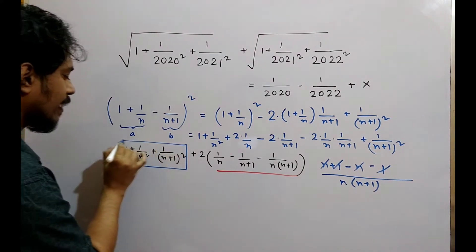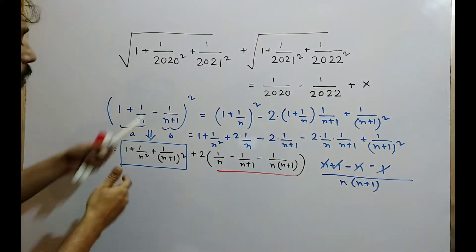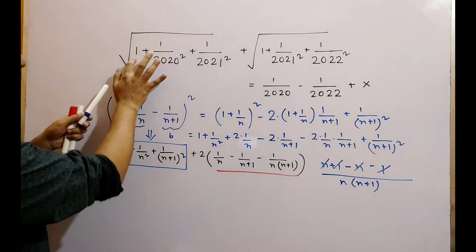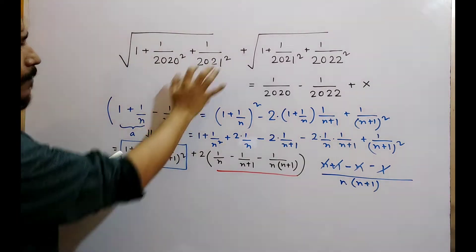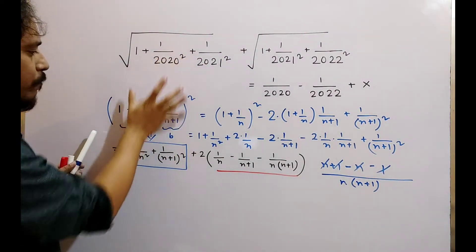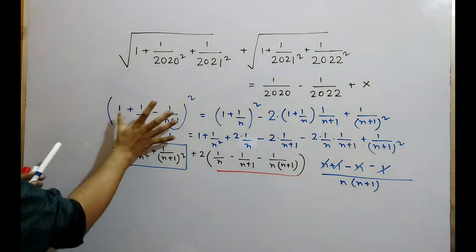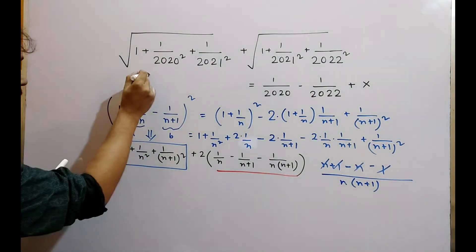So the solution is n. Under root dekho, thoda dhyan se dekho. 1 plus 1 by n square plus 1 by n plus 1 is the whole square. Its result under root me? Thoda dhyan se dekho.